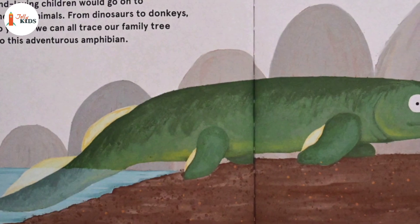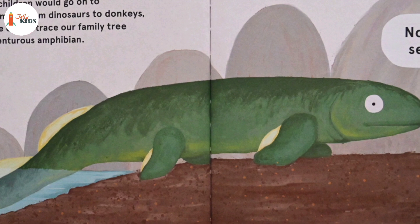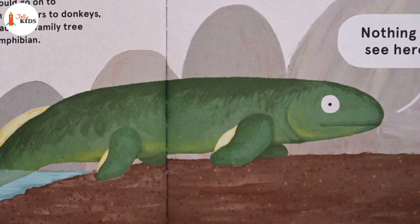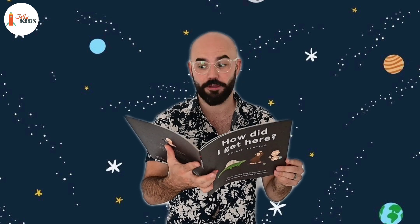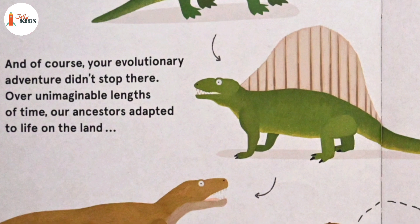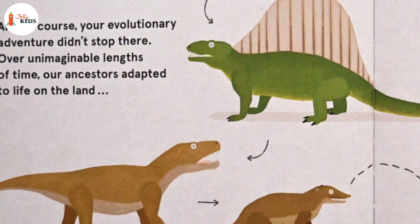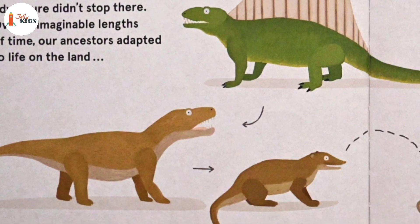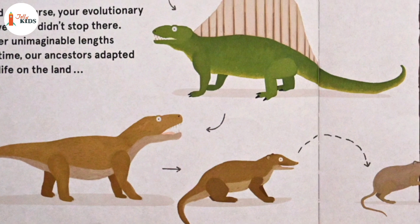Then one fine day, one particularly unassuming but industrious little fish decided to see what she could see beyond the sea. Her land loving children would go on to become land animals. From dinosaurs to donkeys, yaks to you. We can all trace our family tree back to this adventurous amphibian. And of course, your evolutionary adventure didn't stop there. Over unimaginable lengths of time, our ancestors adapted to life on the land, and then life in the trees.